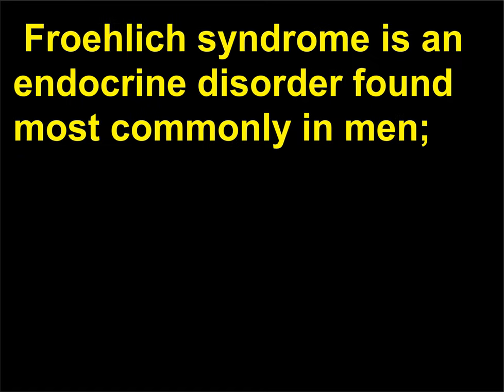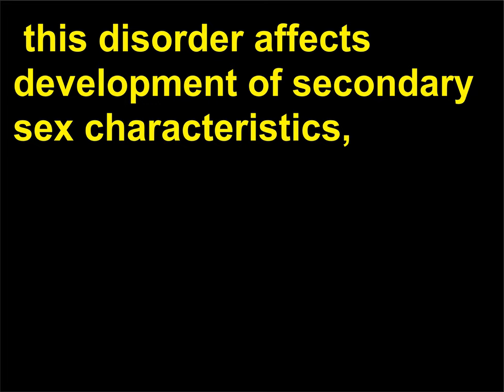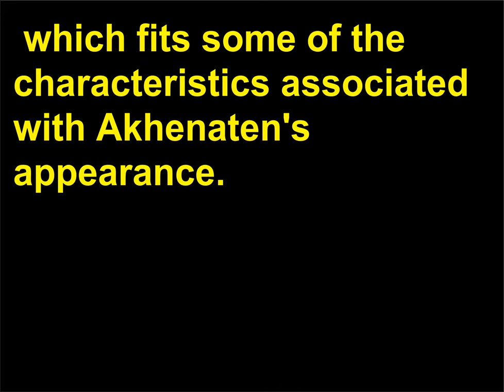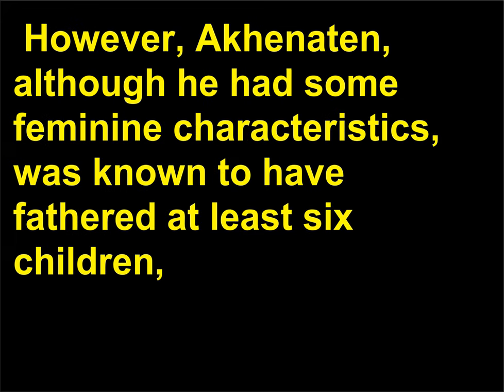One theory is that Akhenaten suffered from either Frohlich syndrome or Marfan syndrome. Frohlich syndrome is an endocrine disorder found most commonly in men; this disorder affects development of secondary sex characteristics, which fits some of the characteristics associated with Akhenaten's appearance. However, Akhenaten, although he had some feminine characteristics, was known to have fathered at least six children.